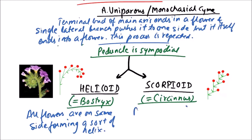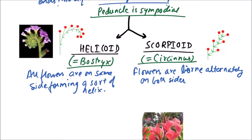In scorpioid, flowers are born alternately on both sides. The examples include Drosera and Begonia. We can observe that first flower is growing this way, second in this way, third in this way. So all are born on the same side.